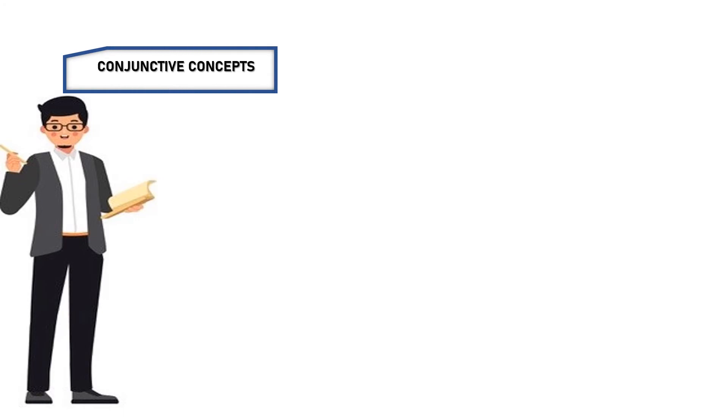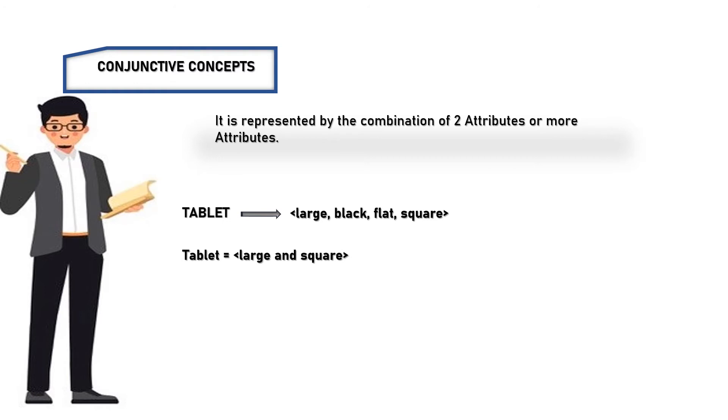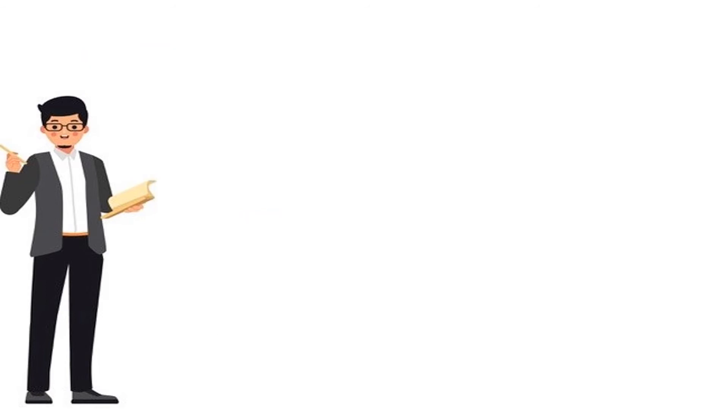Now, let's discuss conjunctive concepts. It is represented by the combination of two attributes or more attributes. Here, let's see: some people have chosen tablet with the features of large, black, flat, and square. Some of the people have chosen tablet equals large and square. And some of the people haven't even chosen the features while selecting the tablet. And some of the people who don't like the features of tablets reject the tablet. And people who don't like phones, the feature is Xi, theta i.